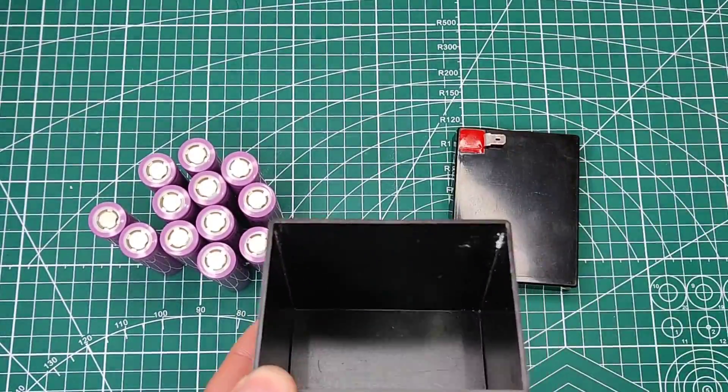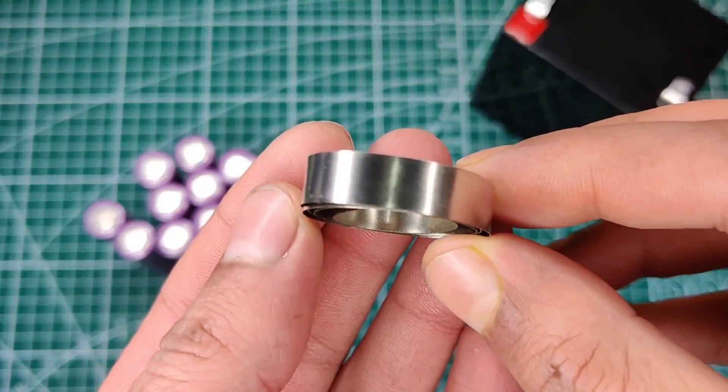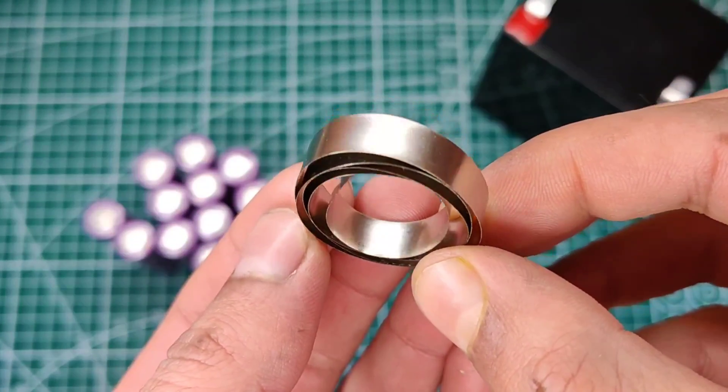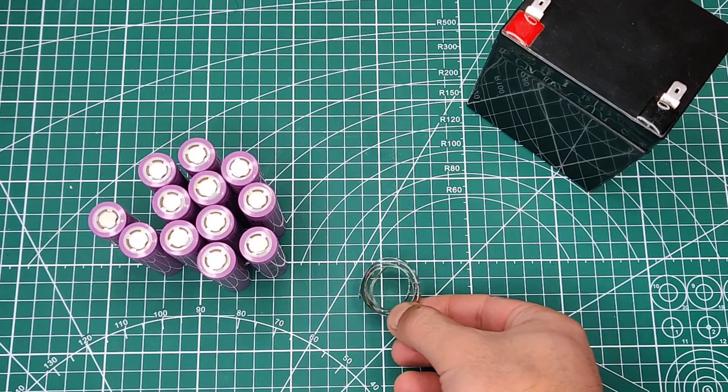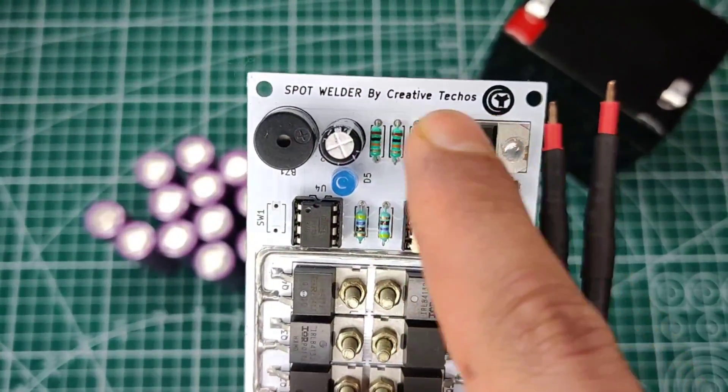You also need nickel strip for welding the cells together, because the soldering method can explode these cells. And obviously a spot welder. I made my own, you can find its video on my channel.